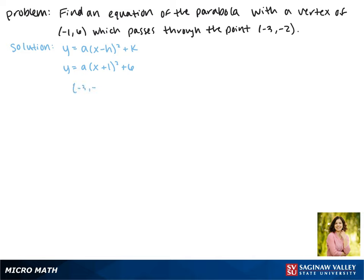Now to solve for a, we can plug in the point negative 3, negative 2. So we'll plug in negative 3 for x and negative 2 for y, giving us negative 2 equals a times negative 3 plus 1 squared plus 6.